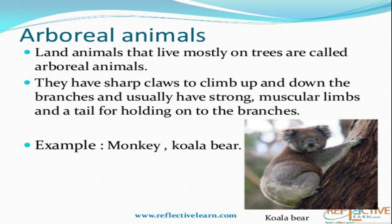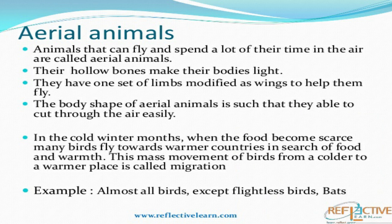Adaptations in arboreal animals: Animals like monkeys, gibbons, koala bears, and chimpanzees have very strong arms and legs to climb up and down trees and for holding branches. They also have sharp claws and broad hips that provide them support while climbing. For aerial animals, birds have board-shaped bodies which help them to cut through the air. They have wings to fly and their bones are hollow, which makes their body very light and enables them to fly.